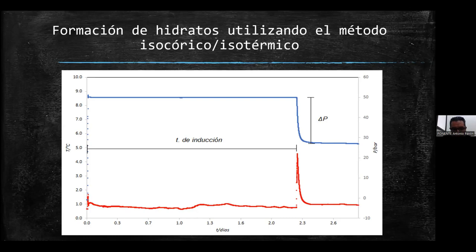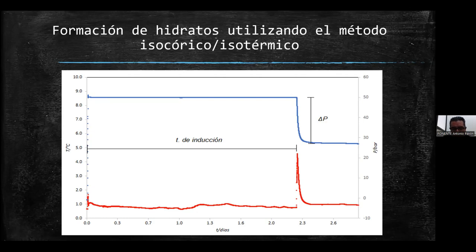Las celdas se encuentran en agitación a 700 revoluciones por minuto durante la inyección del gas. Una vez que la presión y la temperatura están estables, apagamos la agitación y dejamos nuevamente estabilizar el sistema. El sistema presenta una pequeña oscilación por el cambio de temperatura del ambiente, pero en presión el sistema está en equilibrio, aislado a 50 bar.